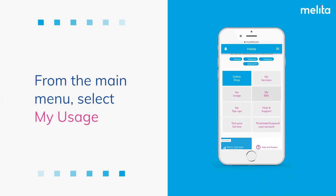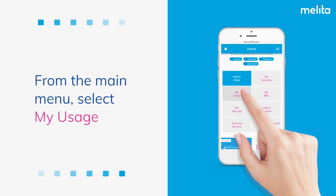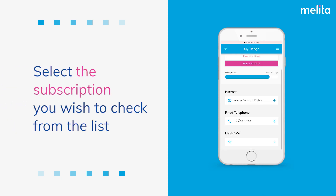From the main menu, select My Usage. Select the subscription you wish to check from the list.